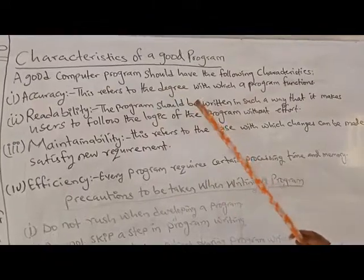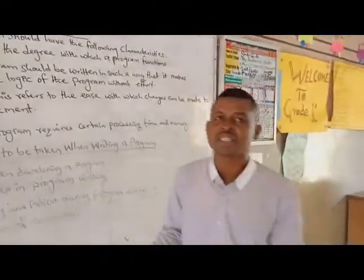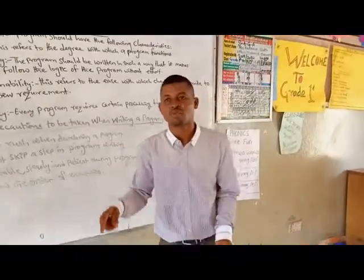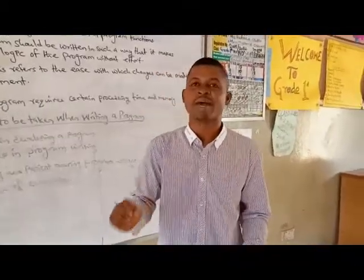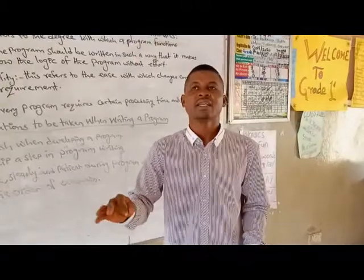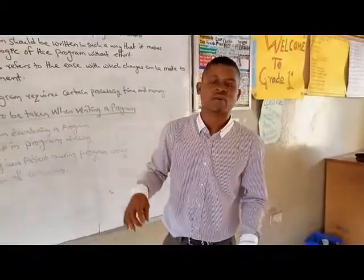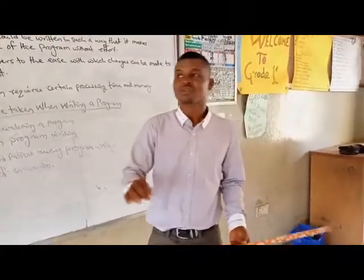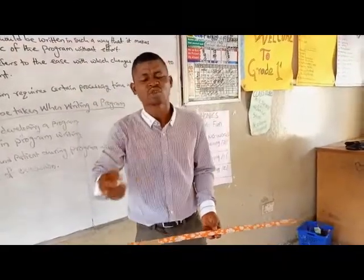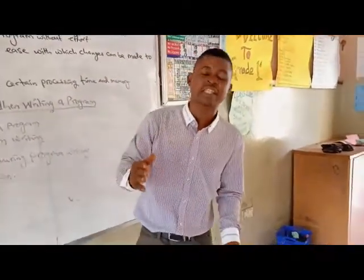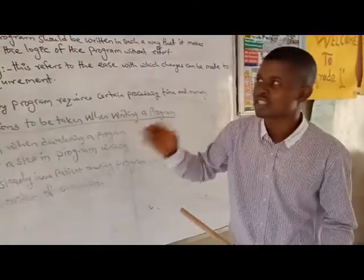Accuracy refers to the degree with which a program functions. A program is accurate if you run it and it gives you the same output and the same result every time. For example, in Zuma, when you play the first stage you qualify for the second stage, and when you finish the second stage you qualify for the third stage — that demonstrates the accuracy of the program.